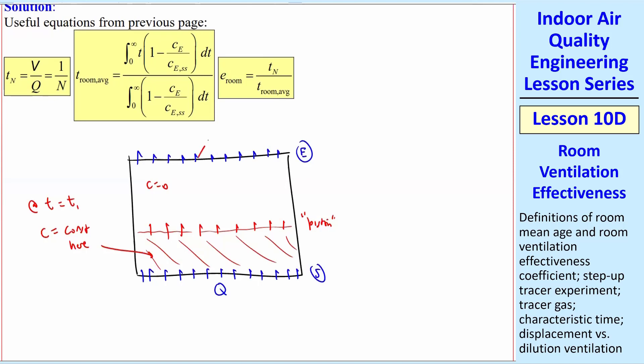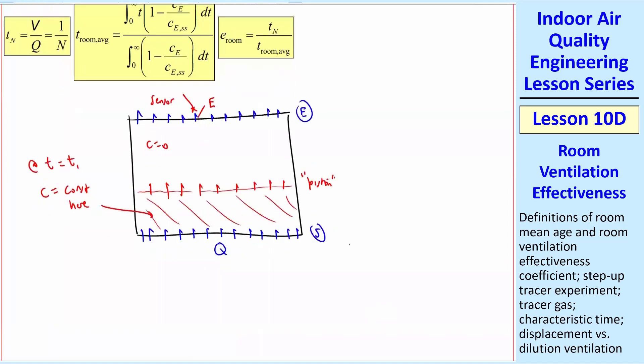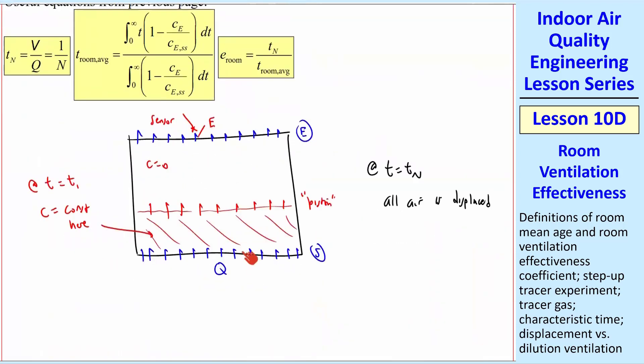And you can think of this interface between the contaminated air and the clean air is like a piston pushing the stale air out. Everything's uniform right to left and front to back in this room. There's nothing special about any one place. So you can pick any of these and call that E and put your sensor there and measure CE as a function of time. By the way, at T equal TN, we know that all the air is displaced. How do I know that? Because TN was 1 over N, and N is the number of room air changes, or it's a volume over Q. So in other words, TN is the time it takes to displace one room air volume if I deal with displacement ventilation in a case. Well, that's what we're talking about.